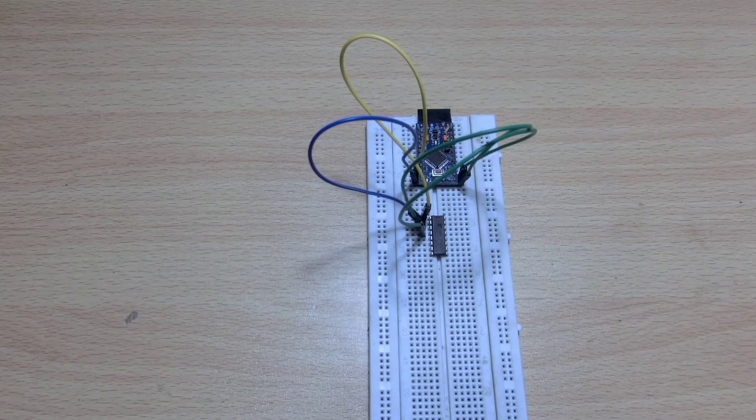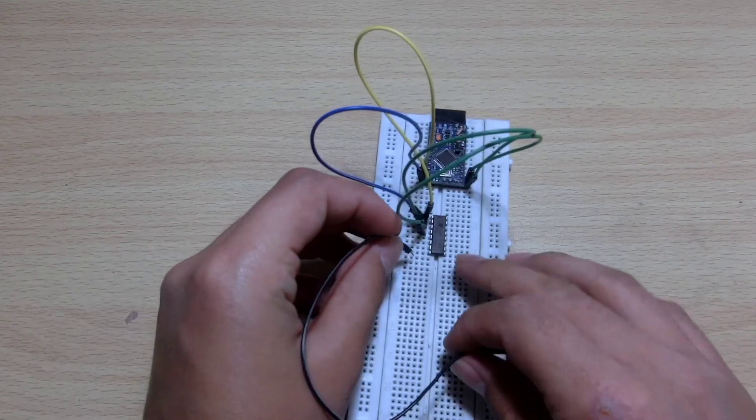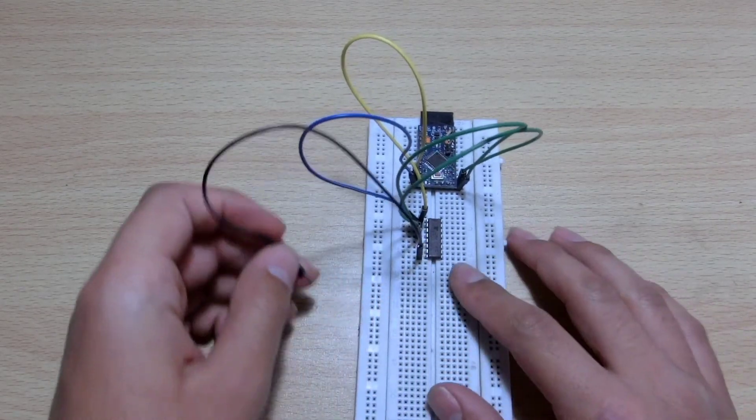Take a jumper cable and attach ground of Arduino to ground of IC. In order for this to work, the IC and Arduino need to share a common ground.